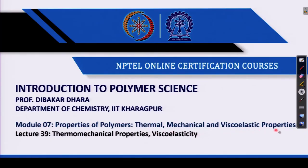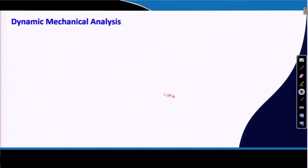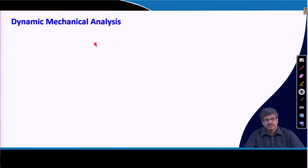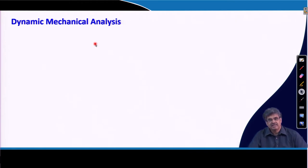Welcome back. In this lecture, I will continue my discussion on viscoelastic properties of polymers. In the last lecture, I discussed that polymers are generally viscoelastic materials, which means that depending upon the temperature and the deformation rate, a polymer can behave from a solid-like behavior to a liquid-like behavior.